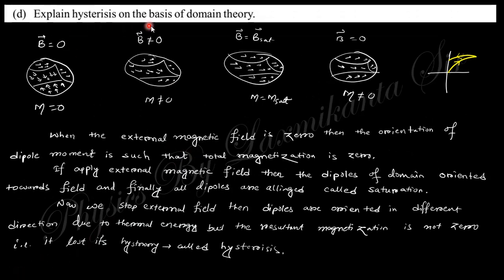Next, explain hysteresis on the basis of domain theory. If you do not have any magnetic field within a domain, then the total magnetization is zero. The dipoles of domain are arranged in such a way. But if you apply the magnetic field, the dipoles want to align along the external magnetic field, and the magnetization is not equal to zero. At the saturation, when all the dipoles are aligned to the external magnetic field, then it's produced the saturation magnetization.